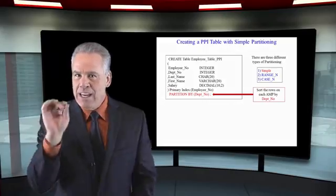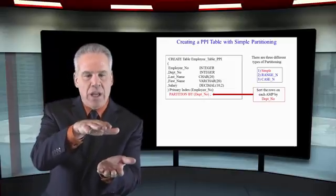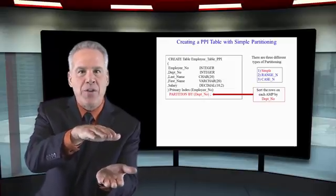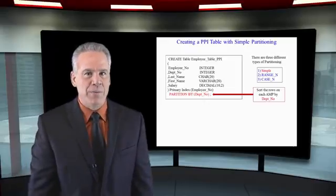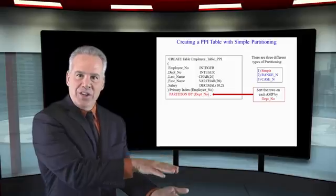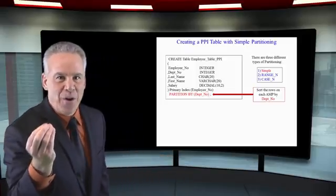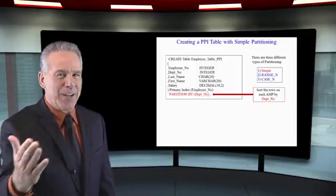Remember, each AMP is going to sort its rows. There's only two ways: by the row ID, or if it's a partition table, by the partition and then the row ID. And that is called the row key.